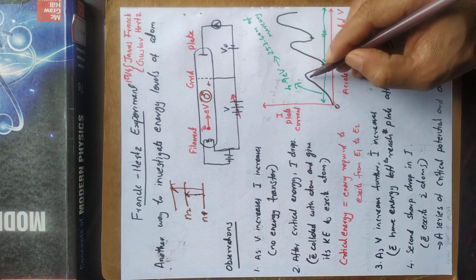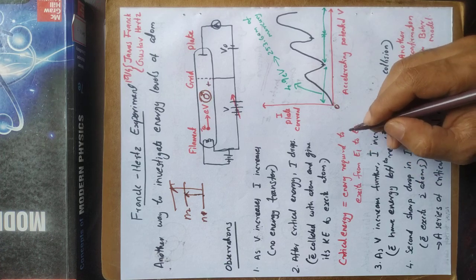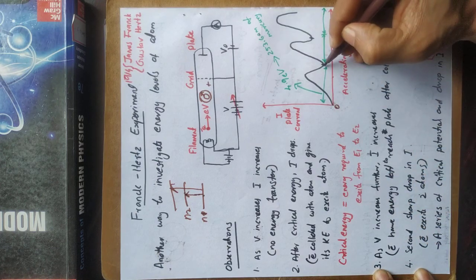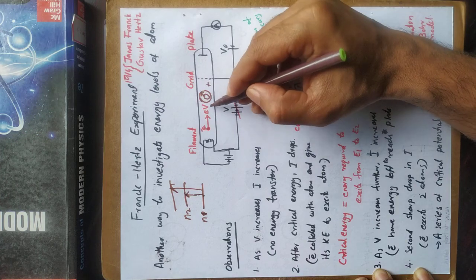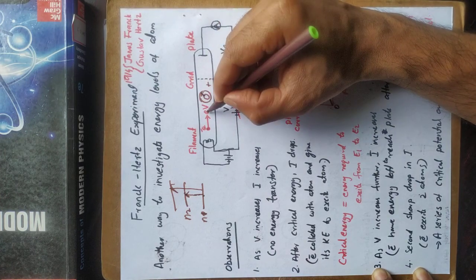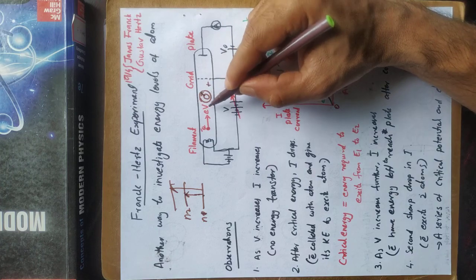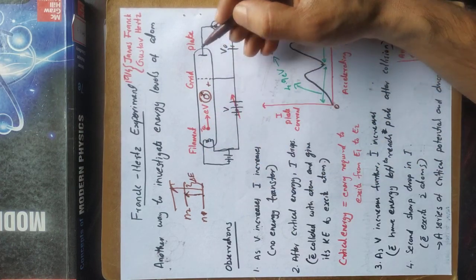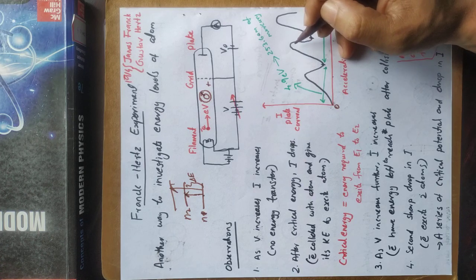What is the drop? The energy E1 to E2 — the first excited state is absorbed. As V increases further, I also increases. After the drop, electrons again gain energy from the accelerating potential. The electrons now have enough energy left to reach the plate after undergoing inelastic collision with the atom.